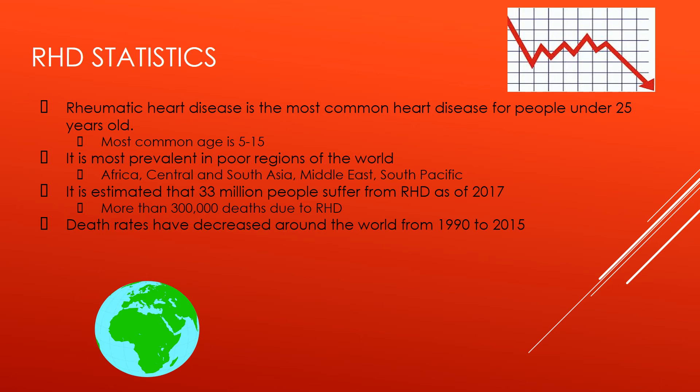Rheumatic heart disease is the most common type of heart disease for young people. It also disproportionately affects those in poorer regions, even those in developed countries, most likely due to the fact that preventative treatments are not as accessible to poorer individuals. This is a problem that many health organizations around the world are trying to fix. As of last year, 33 million people suffer from rheumatic heart disease, and more than 300,000 people die annually from complications due to RHD. Although many people still suffer from rheumatic heart disease, global death rates have decreased over the past 25 years.